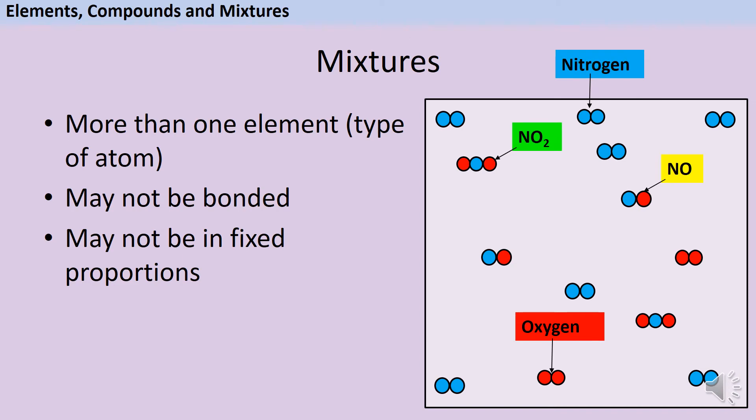Another type of mixture would be where we do have different elements forming bonds and making compounds, but they're not always making the same compound because they're not always joining together in fixed proportions.